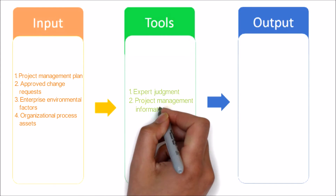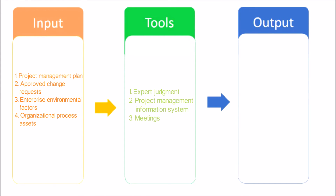Next, let's have a look at tools and techniques used in this process. Expert judgment is used to assess the inputs needed to direct and manage execution of the project management plan. Project management information system. A deliverable is any unique and verifiable product, result, or capability to perform a service that is required to be produced to complete a process, phase, or project. Meetings.